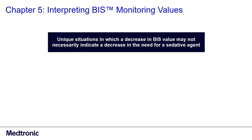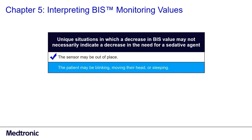For instance, the sensor may be out of place, or the patient may be blinking, moving their head, or sleeping. These can cause a decrease in the BIS value.